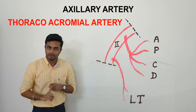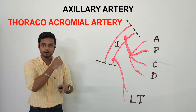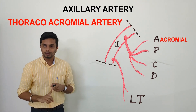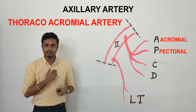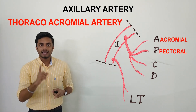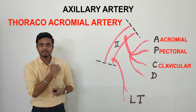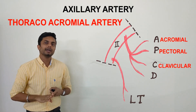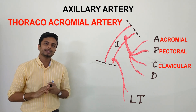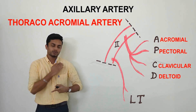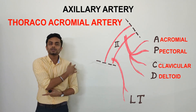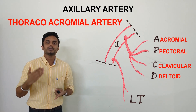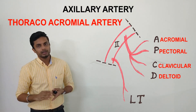The four branches of the thoracoacromial trunk can be remembered as A, B, C, D — where A represents the acromial branch supplying the acromial region, B represents the pectoral branch, C represents the clavicular branch, and D represents the deltoid branch supplying the deltoid muscle region.